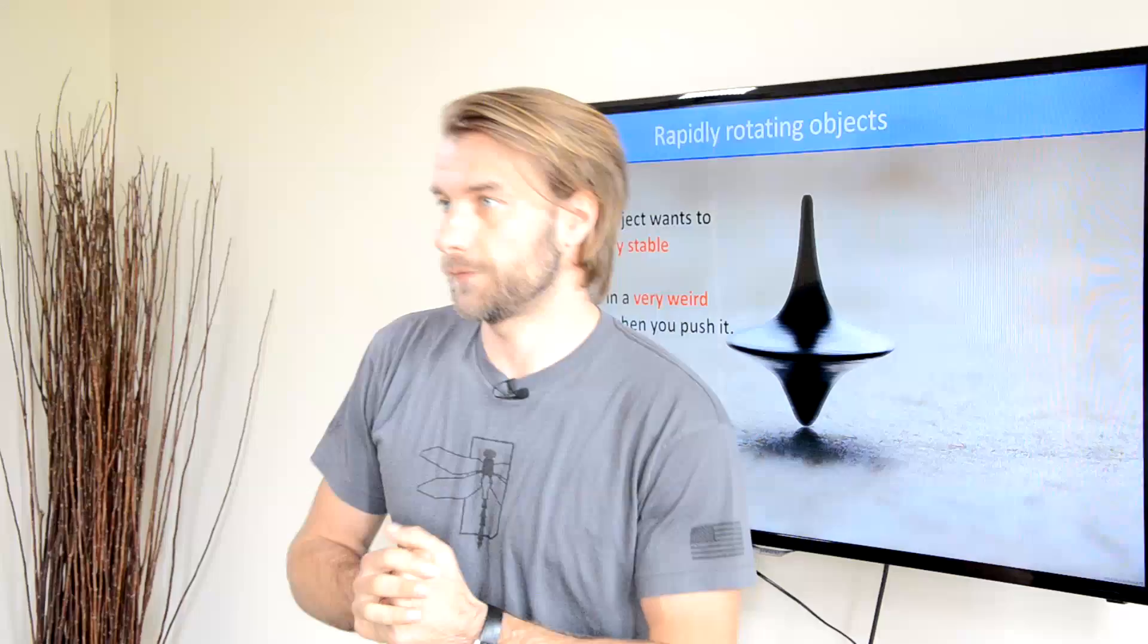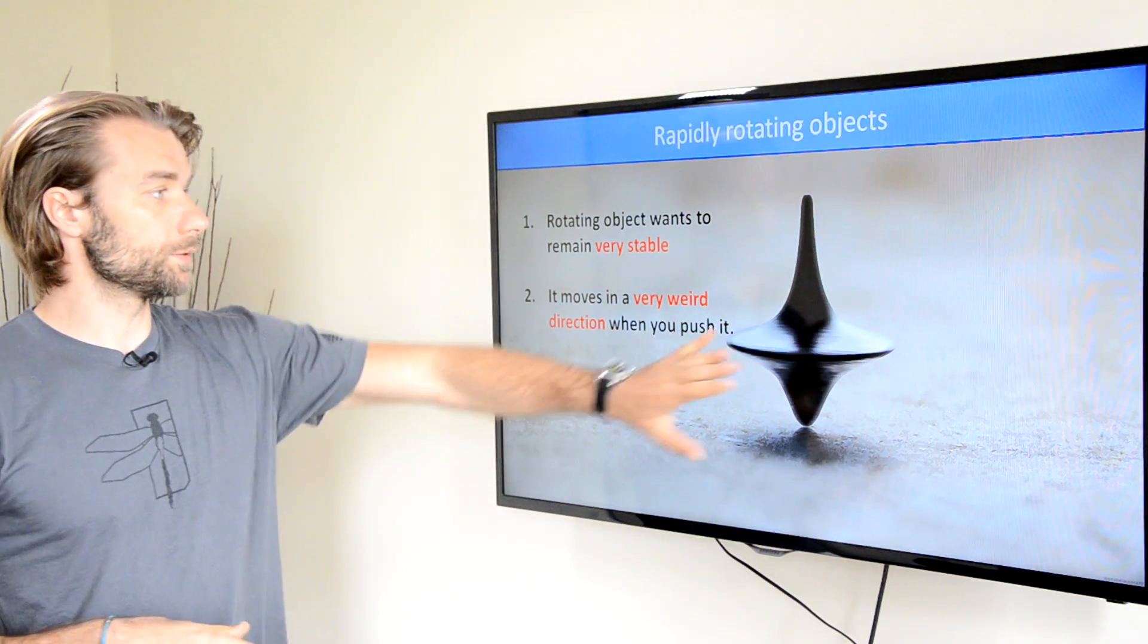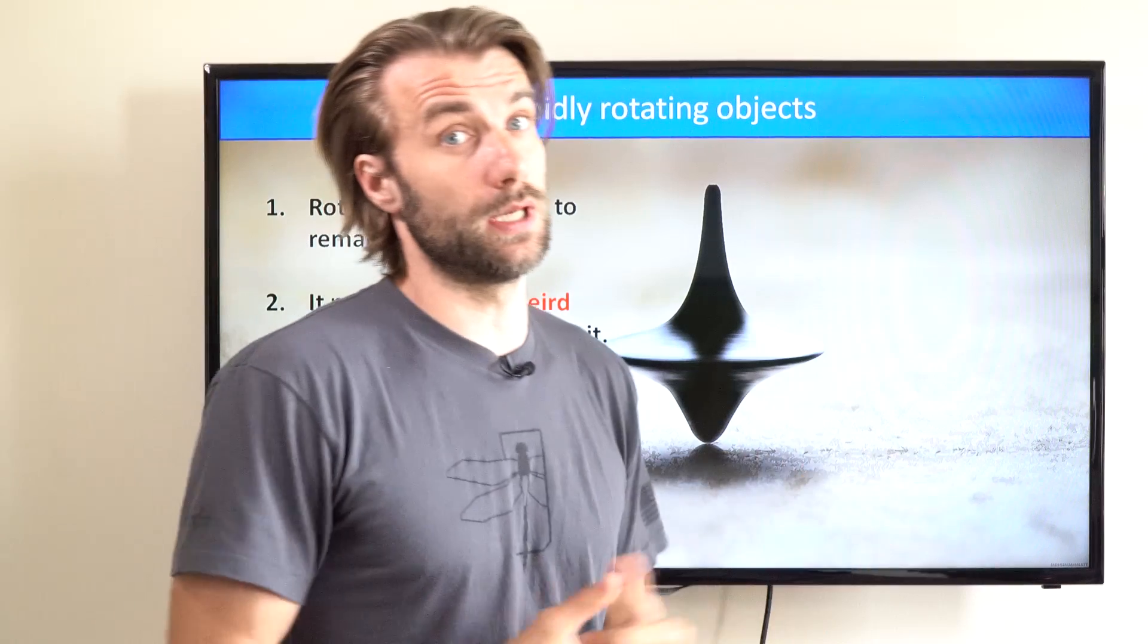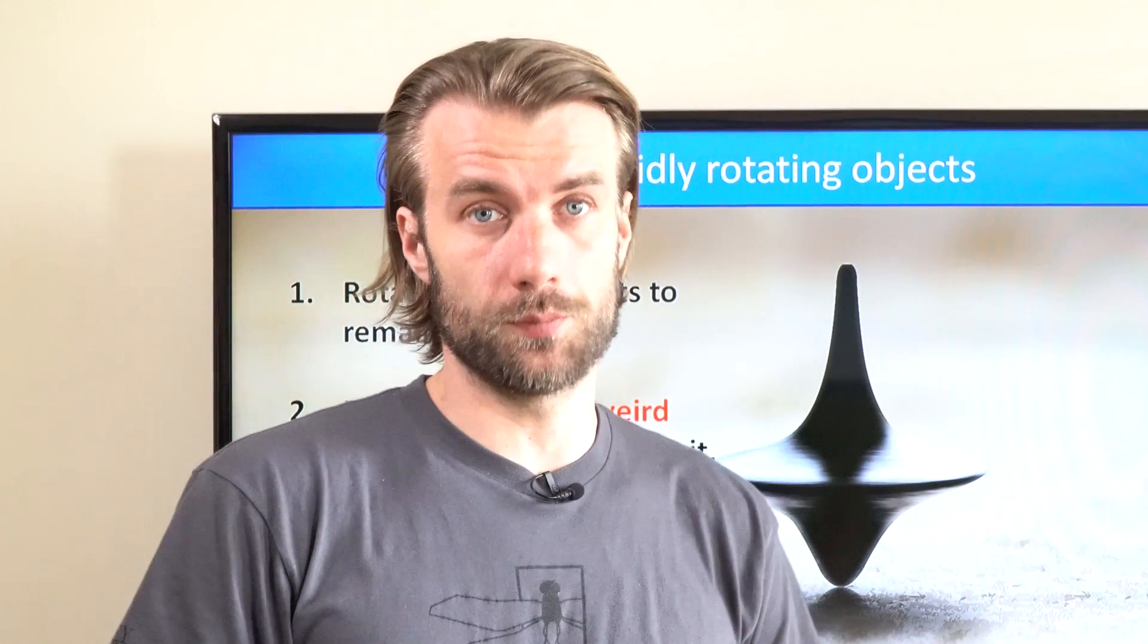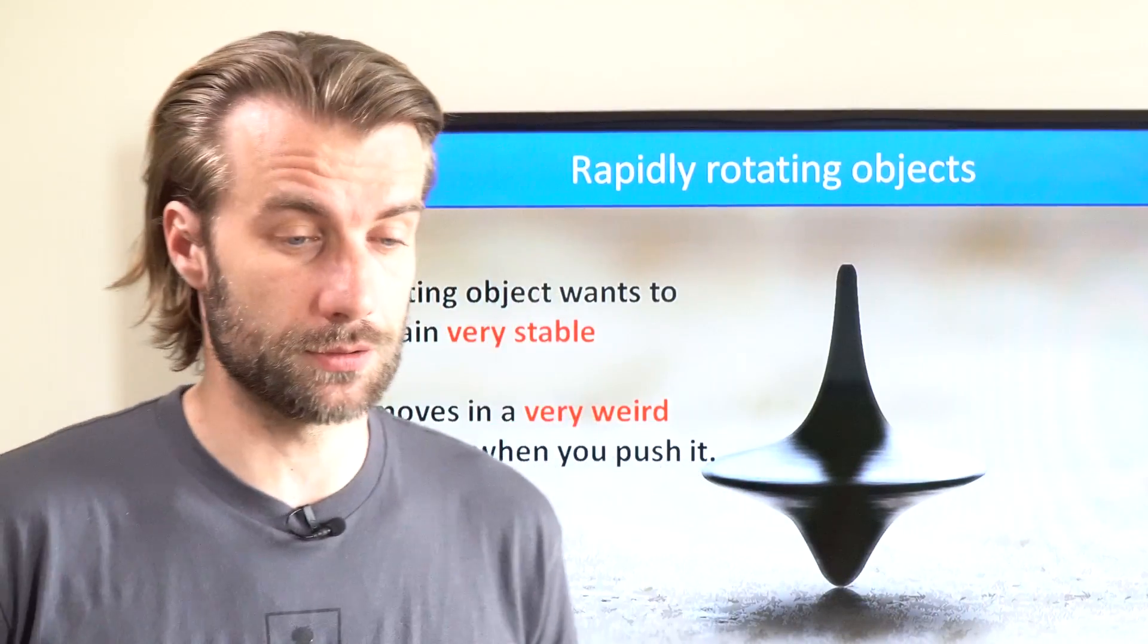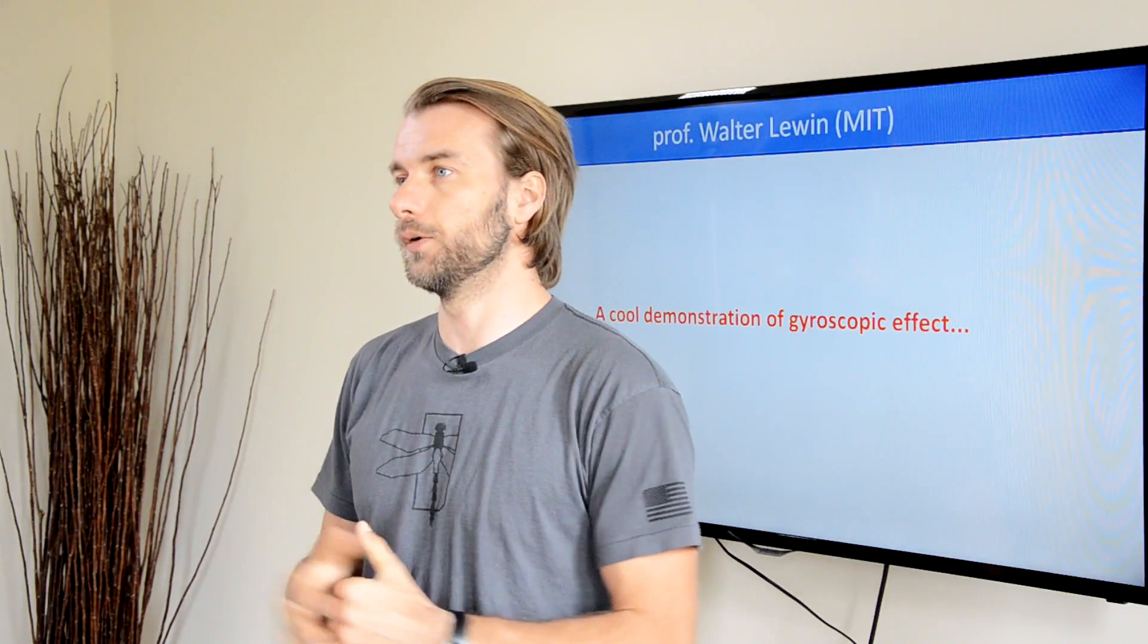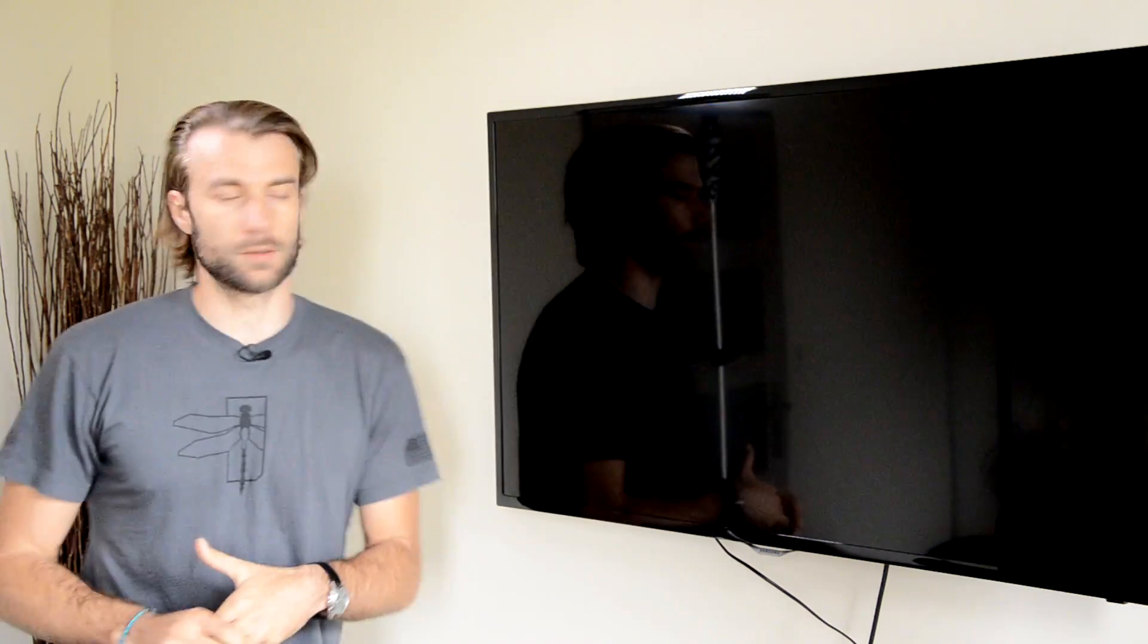You already know this picture from my previous lecture. If you have a rapidly rotating object, it wants to remain stable in its same position. But there is a really weird behavior with every rotating object. Once you apply force on this object, it will move in a completely different direction. One of the best demonstrations of this effect was performed by Professor Walter Lewin from MIT. Let's have a closer look.